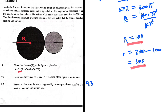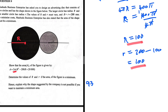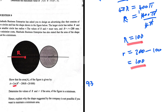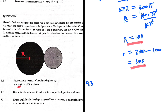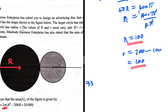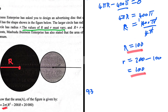9.3 says: hence explain why the shape suggested by the company is not possible if you want to maintain minimum area. Going back to the given information, the values of capital R and small r must vary — that is what the company requires. But in order for the area to be a minimum, capital R and small r must both equal 100, meaning they cannot vary. These two conditions are mutually exclusive, so the shape is impossible.